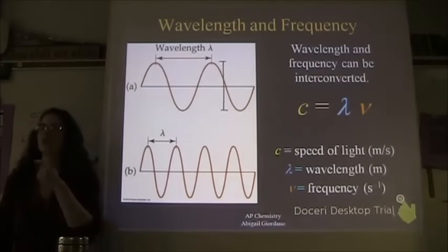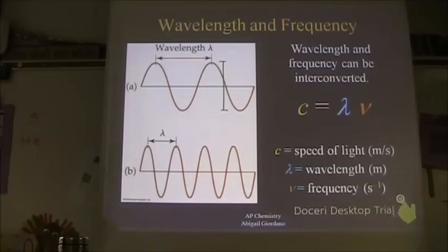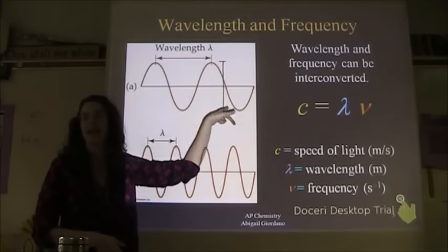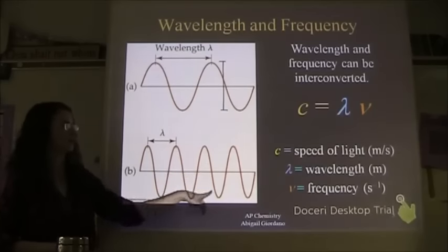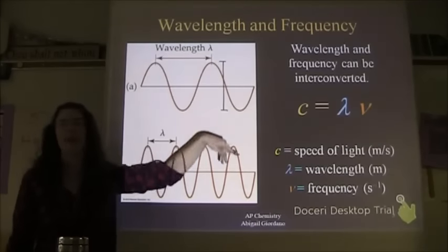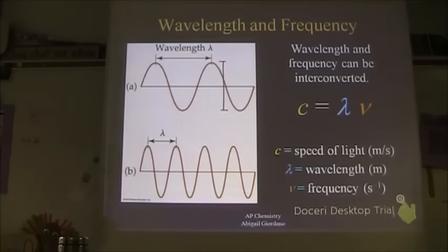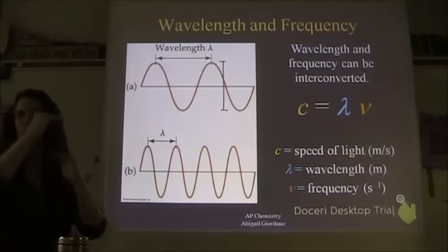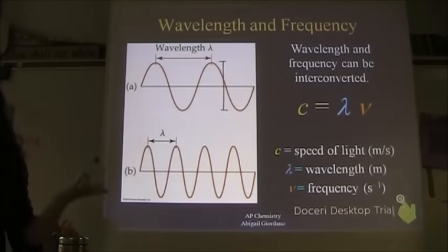For a visible light wave, if you change the frequency, you change the color — a longer wavelength might be red, while a shorter wavelength might be green or blue. If you change the amplitude of a light wave, you change the brightness. Dimmers on light switches just change the amplitude of the light wave.